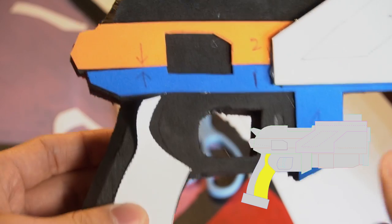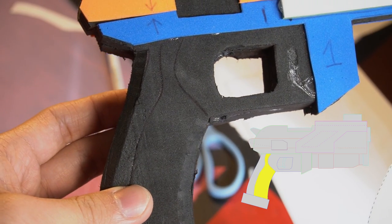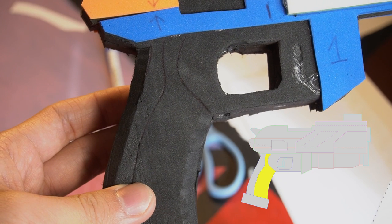Next, I cut out this part of the template for the handle detailing, and I trace it onto the foam. Then I scored the foam, which will become a detail line later when we heat seal this.